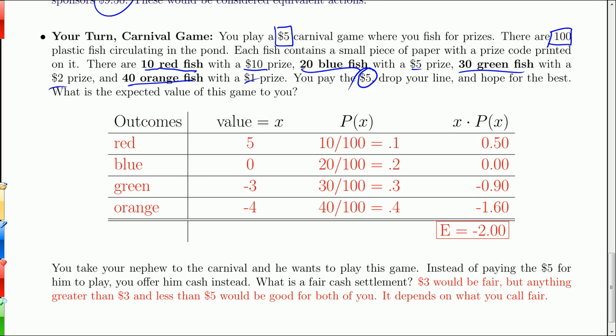I want to calculate the expected value of this game to you. I list my outcomes. The outcomes here aren't numbers. Red, blue, green, or orange. Those are different colored fish. But they do have values to you as the player. Since the red fish, you won a $10 prize, and you spent $5 to play. The red fish, if you get a red fish, that counts as a plus 5. If you get a blue fish, you get a $5 prize. But it cost you $5 to play, so that's really a zero.